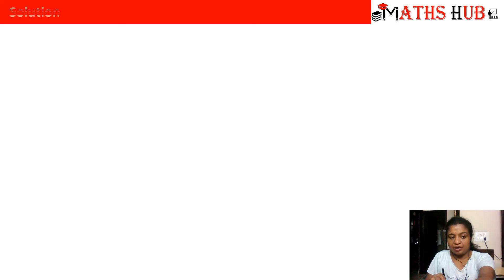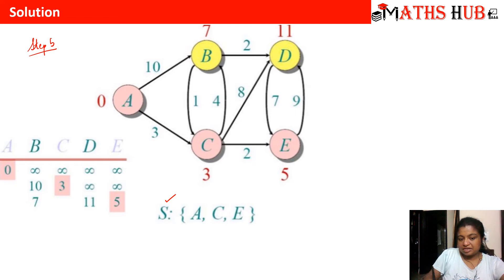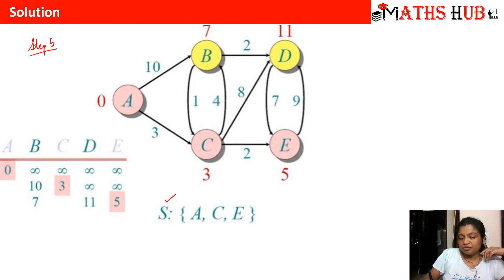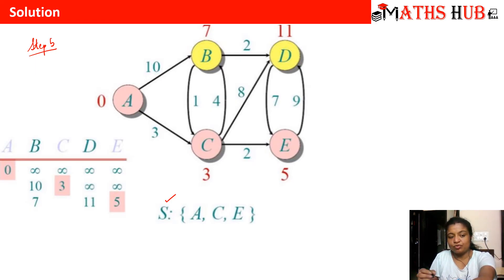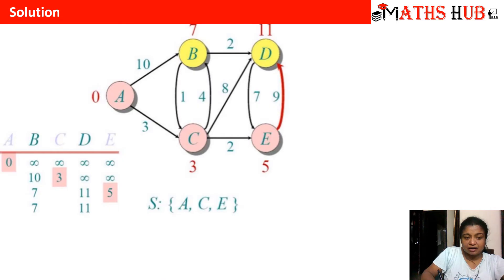In step number five, the source set has been modified to {A, C, E}. Vertex E is highlighted with distance 5, and in the figure vertex E has been marked in pink. The pink vertices are in the source set. We will now cover B and D using these three vertices, repeating the process until all vertices are covered.